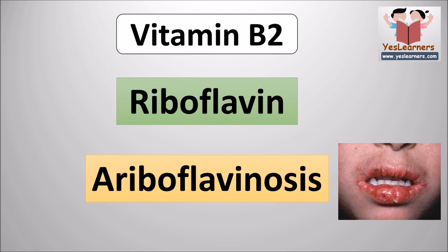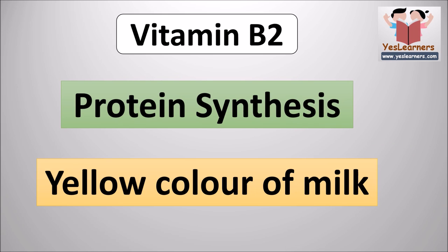The scientific name of vitamin B2 is riboflavin. The disease caused due to the deficiency of riboflavin is ariboflavinosis. Vitamin B2 is essential for protein synthesis. The substance which gives pale yellow color to milk is riboflavin. If milk is exposed to sunlight for a long time, the vitamin lost is vitamin B2.